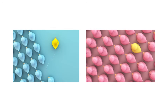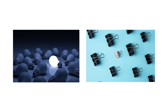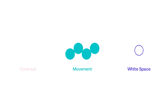What's the first thing you see in any design? It's the element that's emphasised. Emphasis is when one element stands out — it may be bigger, bolder or brighter than anything around it. We add emphasis to the parts of our design we'd like people to notice first. Contrast, movement and white space are some techniques that create emphasis. Let's run through these one by one.